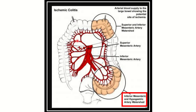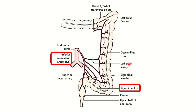We can see the blood supply of the different parts of the gastrointestinal system. The right side of the colon is supplied by the superior mesenteric artery. On the other hand, the left side is mainly supplied by the inferior mesenteric artery. Here, this part is the sigmoid colon, and you can see the sigmoid colon is supplied by this artery.